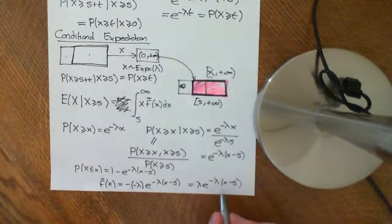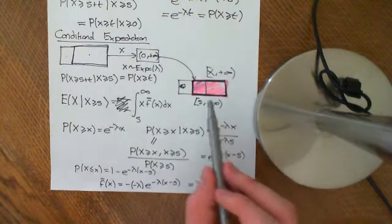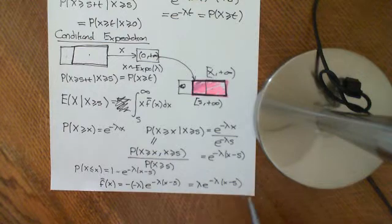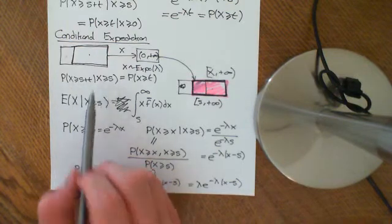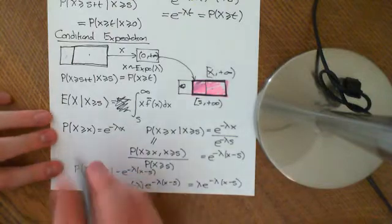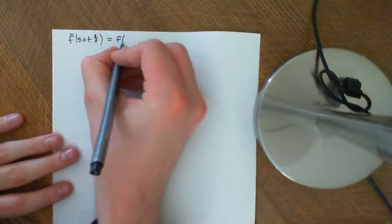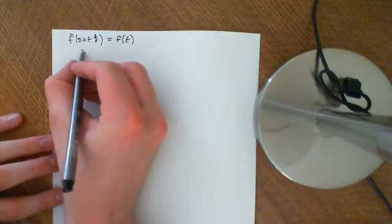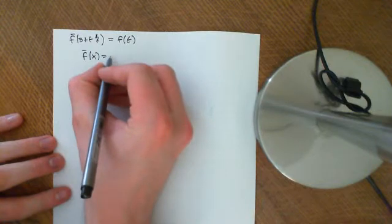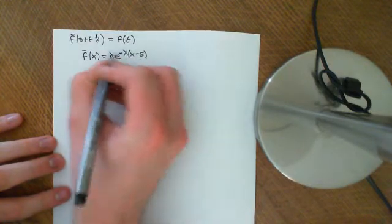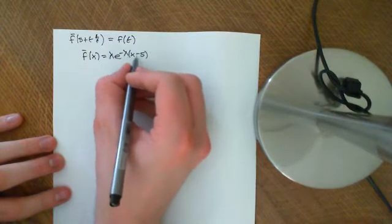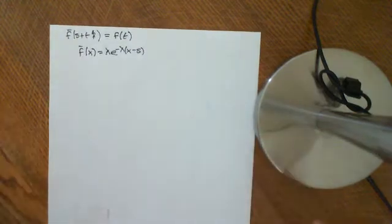So because of the memoryless property, the PDF of a value x = s + t, given that X is greater than or equal to s, is the same as the original PDF evaluated at t. Because f̄(x) equals lambda e to the negative lambda times x minus s, and if we put in s + t we just get lambda e to the negative lambda t, which equals f(t). So the PDF has just shifted.